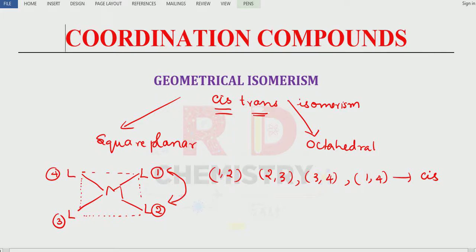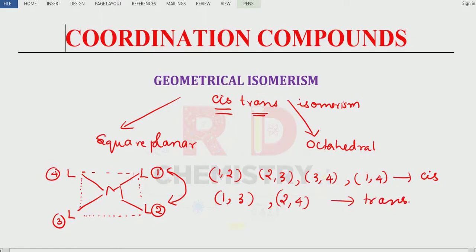For trans positions: one and three are on opposite ends, and two and four are on opposite ends — these are the trans positions. So under geometrical isomerism we study two isomers for the same compound: one is the cis isomer and the other is the trans isomer.